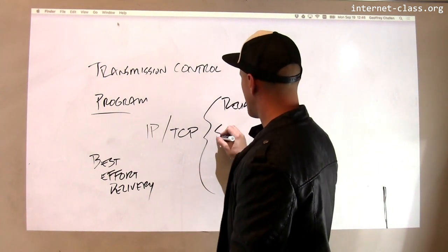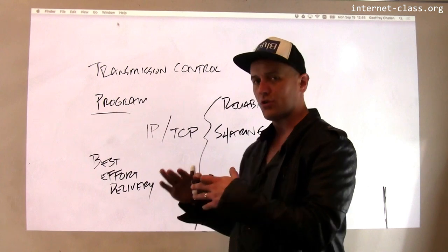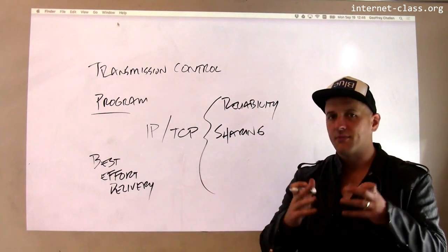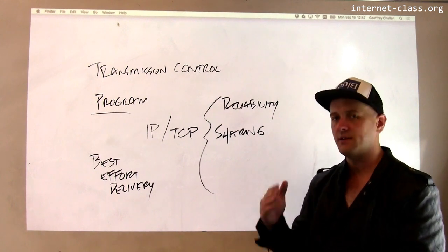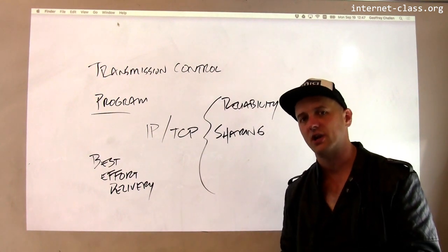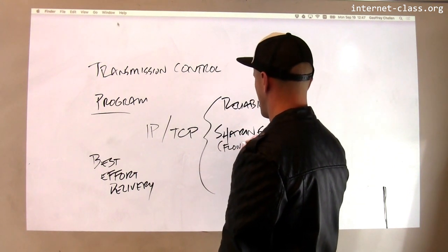TCP also adds some degree of sharing of network resources. When the network becomes congested, TCP's goal is to respond so that different hosts and clients can share network resources appropriately. This is also sometimes called flow control.